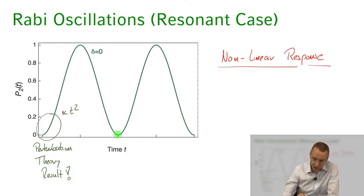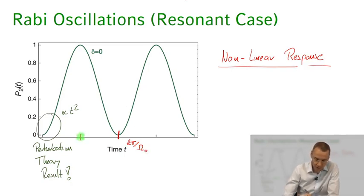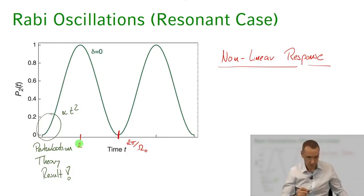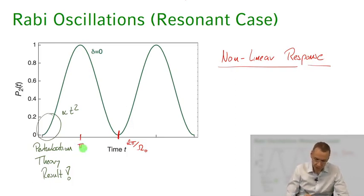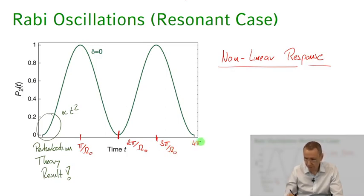When do I go back to the ground state? Turning back to our equations, we find this is the case for 2π over the resonant Rabi frequency. I go to the excited state for π divided by ω₀, then back to the excited state again at 3π over ω₀, and back to the ground state again at 4π divided by ω₀.